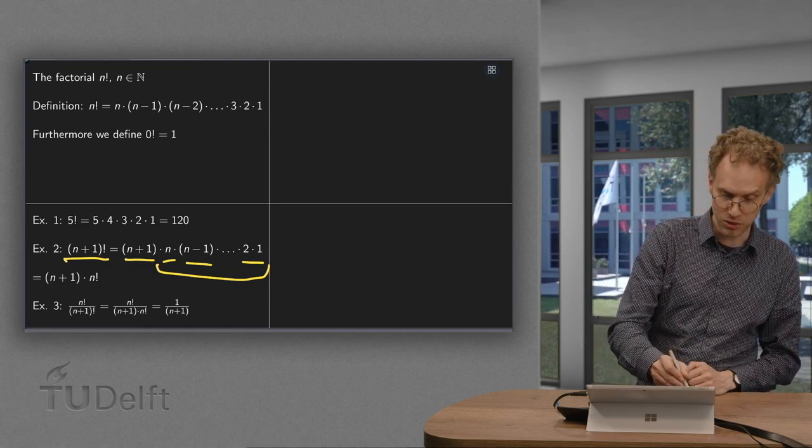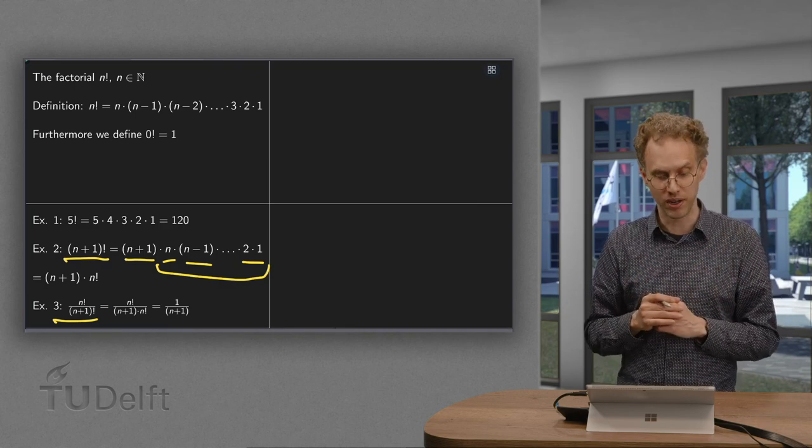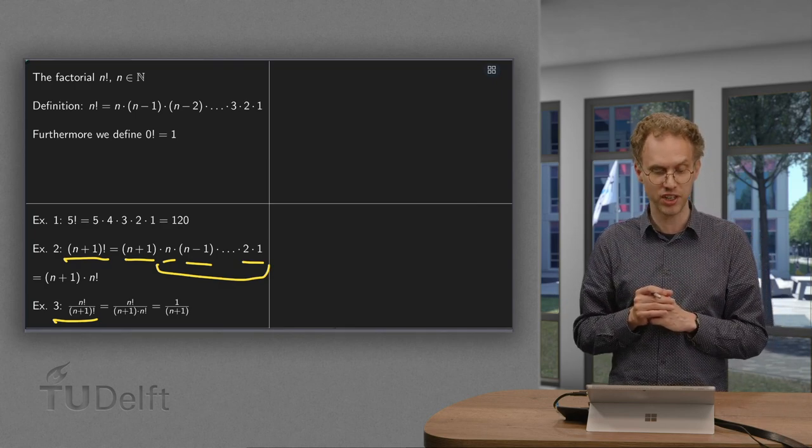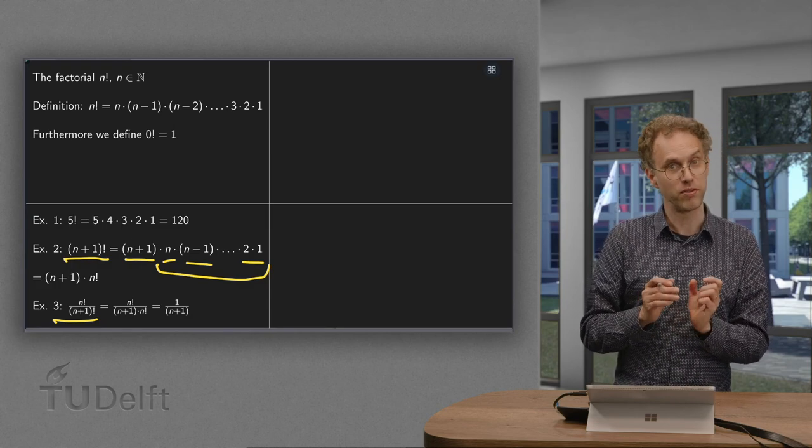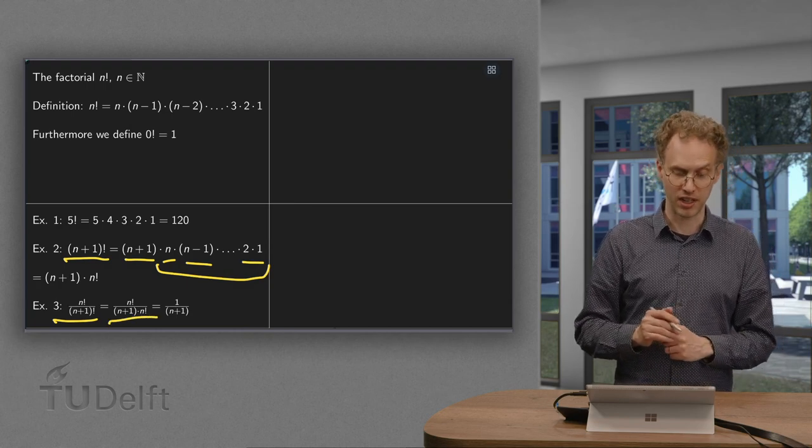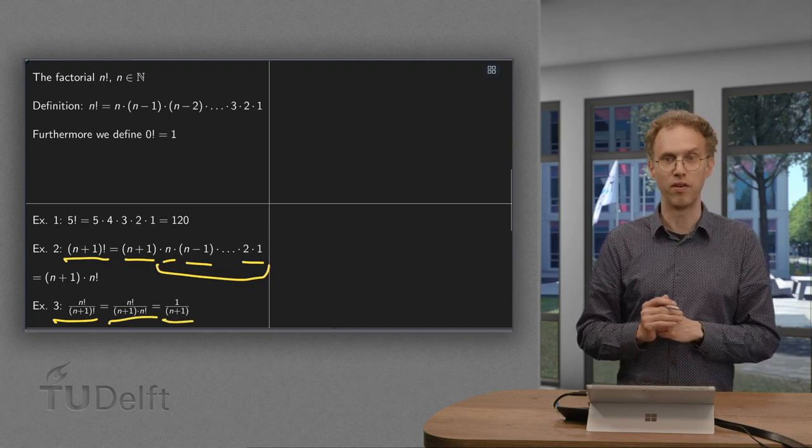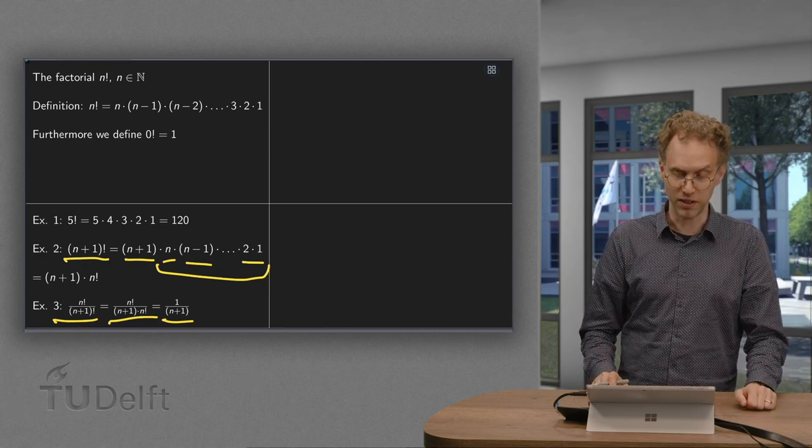And we can use this to simplify quotients which occur often if you are doing a ratio test in sequences and series. So what do we get then? We rewrite n plus 1 factorial as n plus 1 times n factorial. The n factorials cancel out and you get 1 over n plus 1. So those are some formulas involving the factorial.